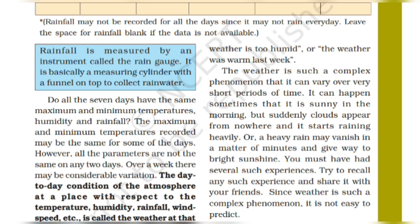Weather is such a complex phenomenon which changes in a very short period of time. For example, the sky can go from bright sunlight to dark clouds very quickly — this varies in a very short span of time.